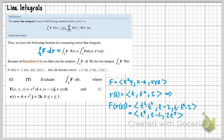Next thing I'm going to do is find r prime t. And that's going to be 1, 2t, 0. So there's my r prime t.